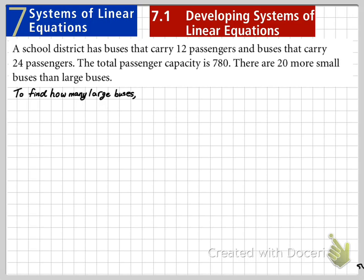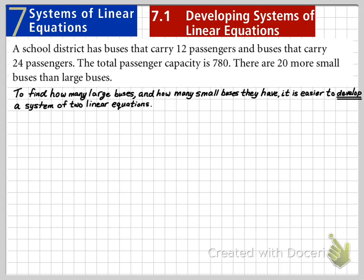To find out how many large buses and how many small buses they have, it's easier to develop a system of two linear equations to solve this. If we let X be the number of small buses and we let Y be the number of large buses, we can set up a couple of different scenarios.